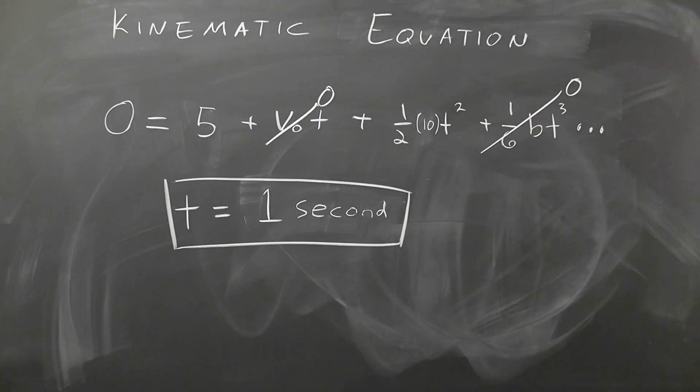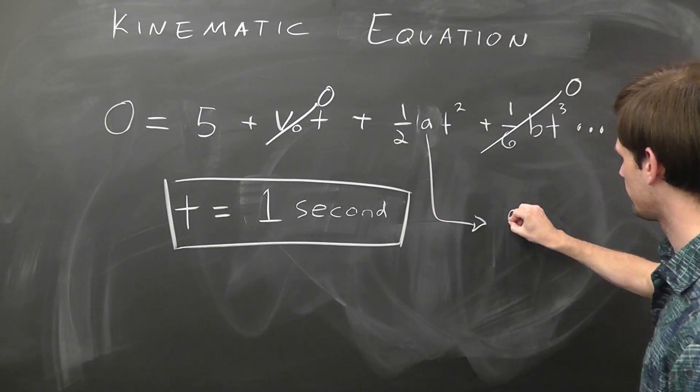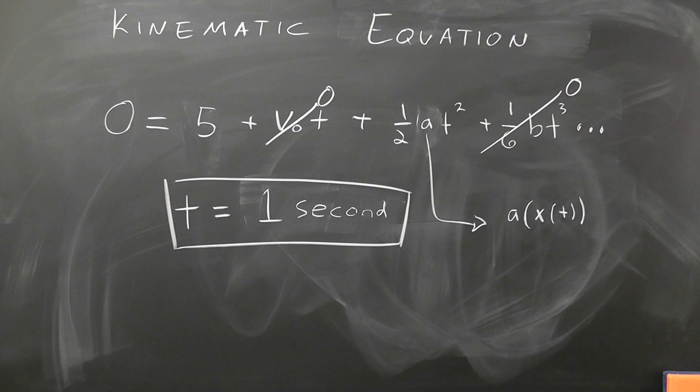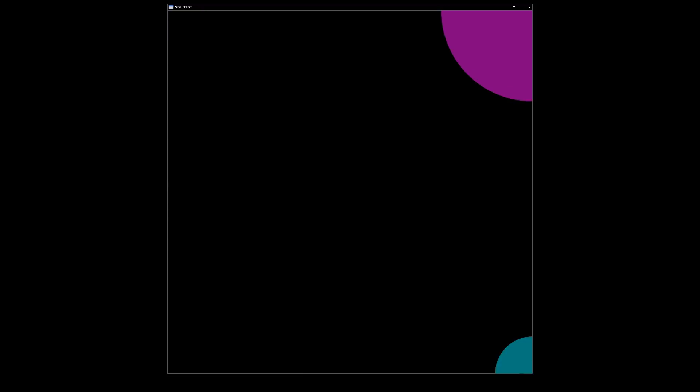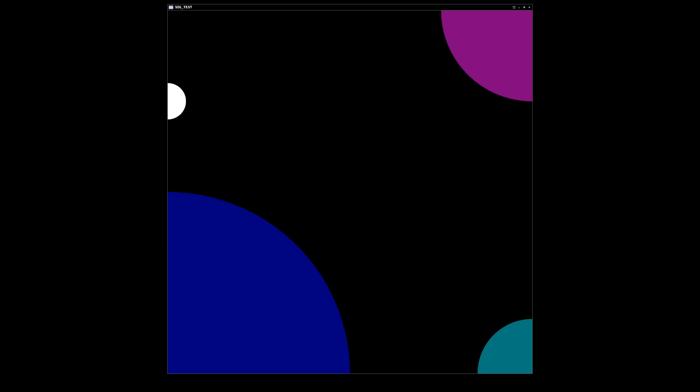However, what if our acceleration is no longer constant, but instead a function of position which is a function of time? Imagine, for example, an asteroid moving through multiple planets' gravitational field.